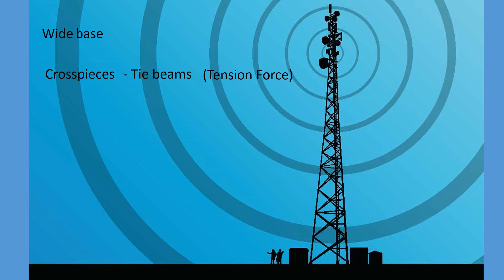Sections of the tower are held in position by beams called struts. These struts are diagonal members that support the sections by pushing against them and keeping them in position. A pushing force is called a compression force.